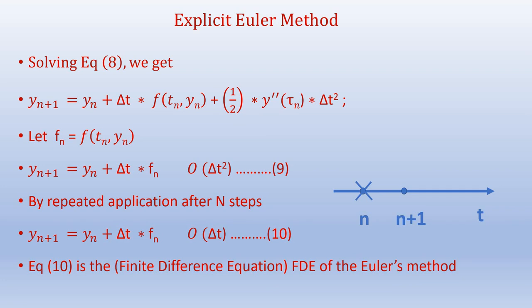Our objective is to find y_{n+1}, so we rearrange the equation to get y_{n+1} = y_n + Δt·f(t_n, y_n) + (1/2)·y''(τ_n)·Δt². If we let f_n = f(t_n, y_n), we have y_{n+1} = y_n + Δt·f_n, which is of order Δt². By repeated application after n steps, we lose one order, and the finite difference equation for the explicit Euler method becomes y_{n+1} = y_n + Δt·f_n, of order Δt.